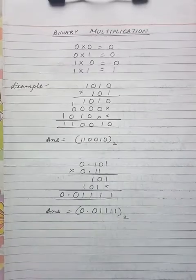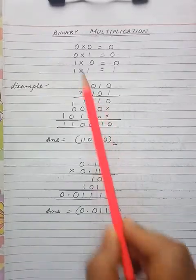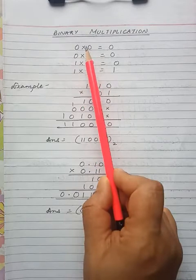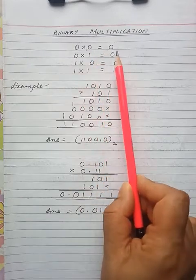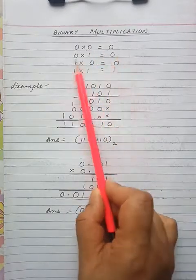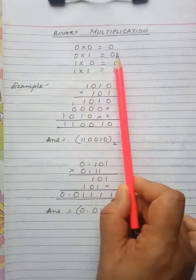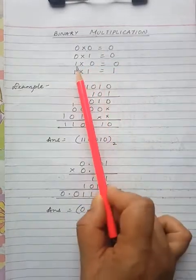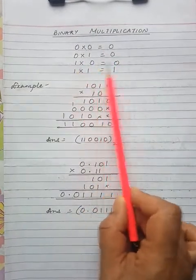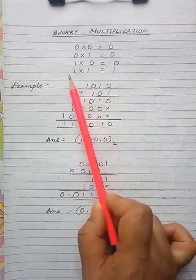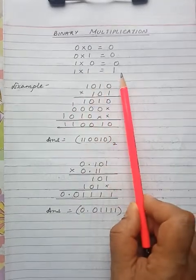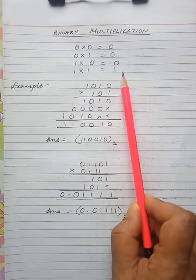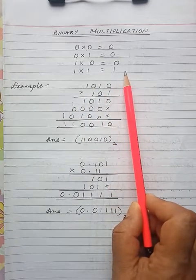Next comes binary multiplication. The rules are: 0 times 0 equals 0, 0 times 1 equals 0, 1 times 0 equals 0, and 1 times 1 is 1. It is similar to decimal multiplication.